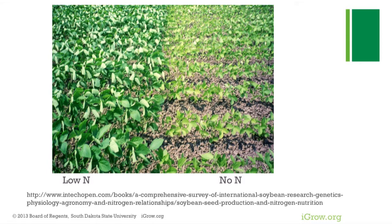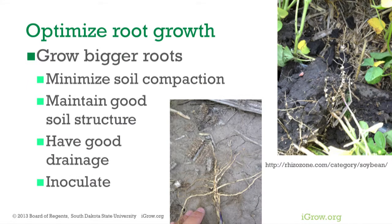Applying low nitrogen amounts versus none can accelerate crop canopy closure, which reduces evaporative soil losses and gets photosynthesis working faster. You also want to optimize root growth, minimize soil compaction — stay out of your field, don't drive equipment unnecessarily — maintain good soil structure, have good drainage, and inoculate. You can see good nodules on one root versus poor nodules on another.